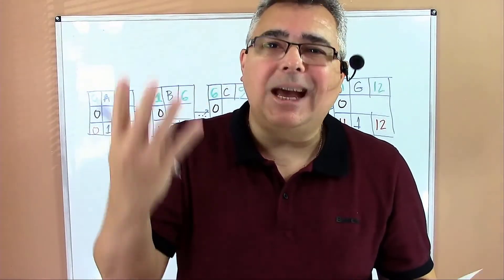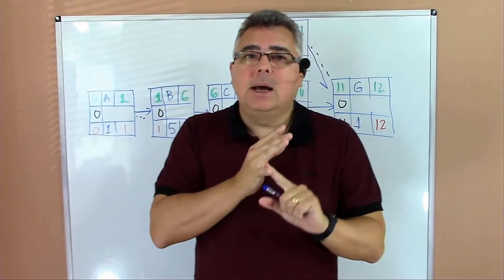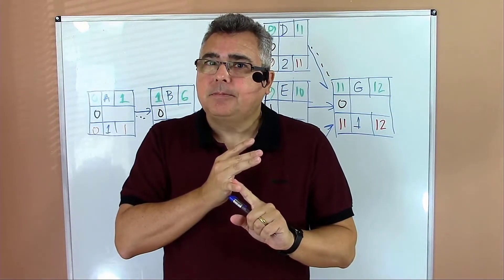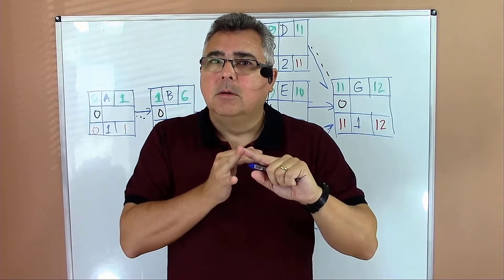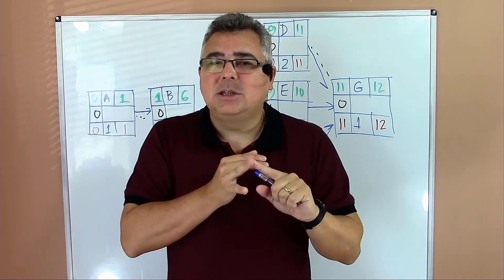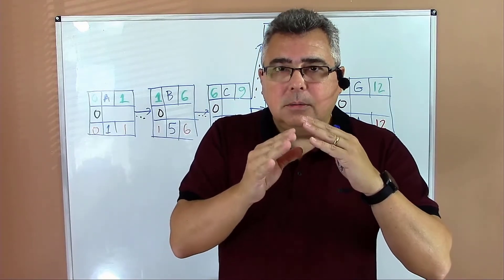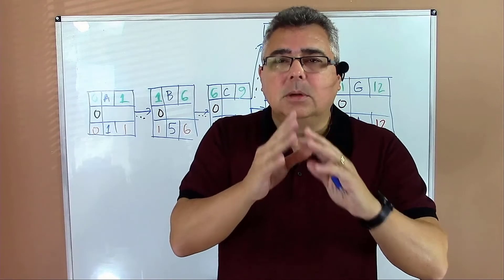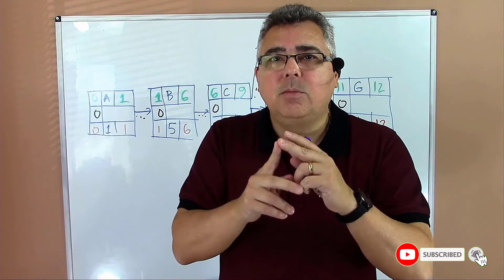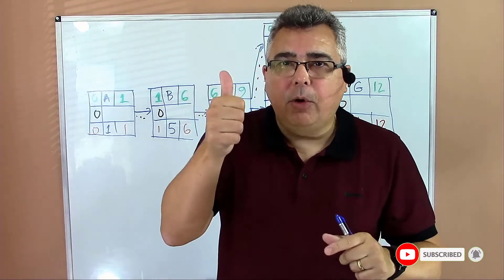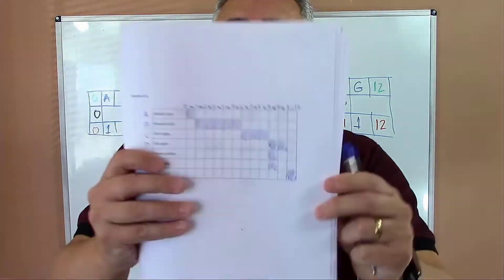You have four steps: step one, estimate duration in the WBS dictionary. Step two, understand the activities relationships, predecessors, and constraints. Step three, draw the AON project network and compute times. Step four, create the project schedule using a Gantt chart.